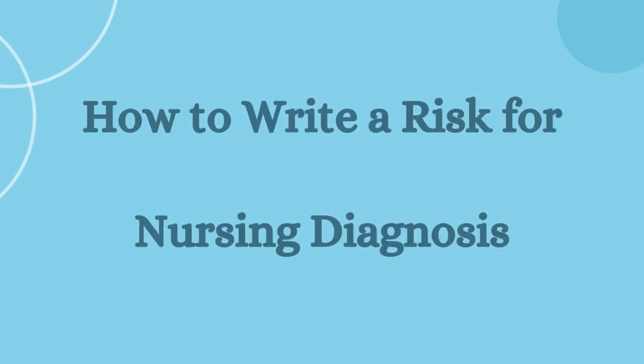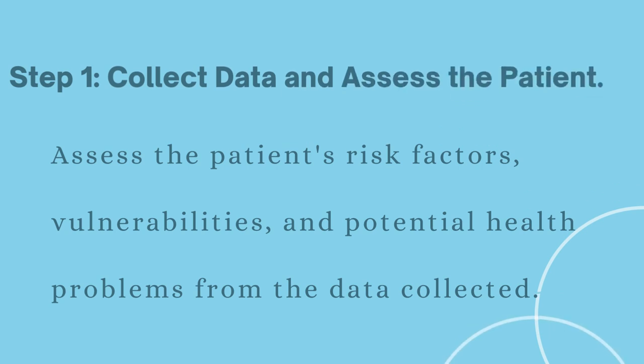How to Write a Risk for Nursing Diagnosis. Step 1: Collect data and assess the patient. In this step, gather comprehensive data about the patient's medical history, current health status, physical assessment, laboratory results, and any other relevant information. Assess the patient's risk factors, vulnerabilities, and potential health problems.